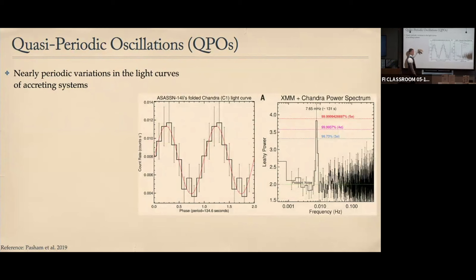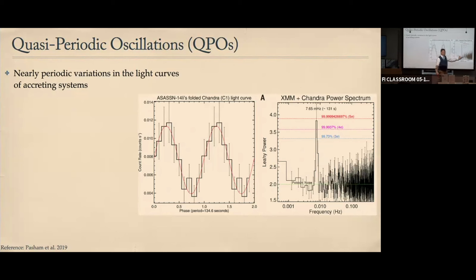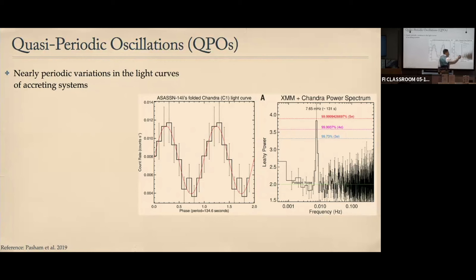QPOs are quasi-periodic oscillations — brightness oscillations seen in the X-ray light curves of many or most of these X-ray binaries. Most of the time QPOs are discovered by Fourier-transforming the light curve and looking at power as a function of frequency; the QPOs show up as a spike in power. The peak has some width to it — not a single frequency — which is why they're called quasi-periodic oscillations.